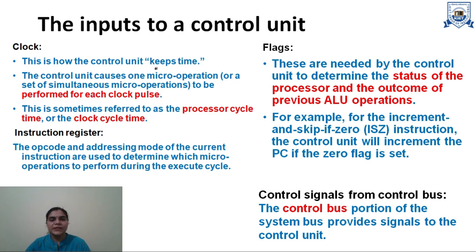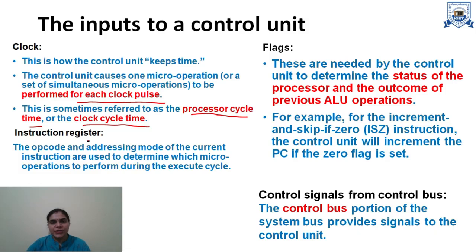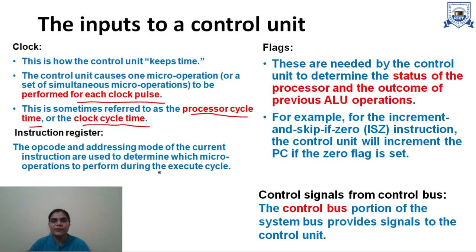Clock basically provides the timing. The control unit causes one or a set of micro operations to be performed for each clock pulse. This clock timing is also called processor cycle time or clock cycle time. The instruction register holds the instruction going to be executed by the processor. It has parts such as opcode and addressing modes of operands, which are used to determine which micro operations to perform during the execute cycle.